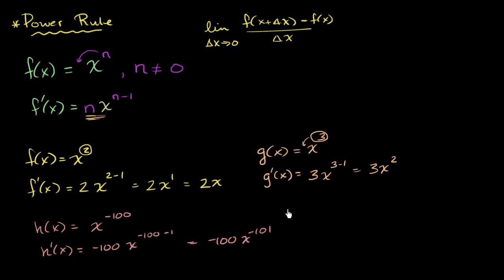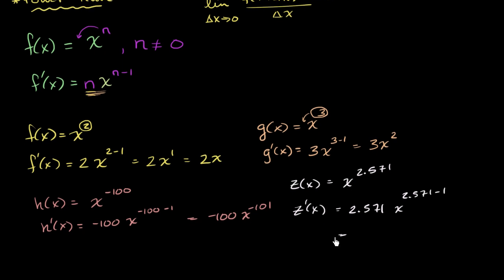Let's do one more. Let's say we had z of x. z of x is equal to x to the 2.571 power. And we are concerned with what is z prime of x. Well, once again, power rule simplifies our life. n is 2.571, so it's going to be 2.571 times x to the 2.571 minus 1 power. So it's going to be equal to, let me make sure I'm not falling off the bottom of the page, 2.571 times x to the 1.571 power.